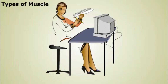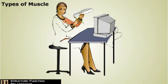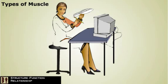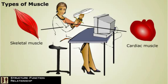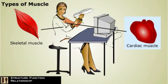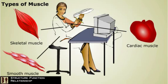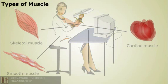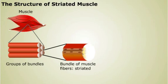In our body, we have several different types of muscle, each specialized for its function. Vertebrates have two types of striated muscle: skeletal and cardiac. Skeletal muscle is used to control voluntary movements of the body. Cardiac muscle is found only in the heart. We also have smooth muscle, which lines our hollow organs and blood vessels. The structure of each type of muscle helps it carry out its function.